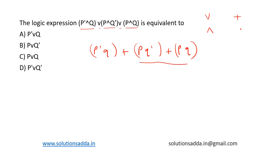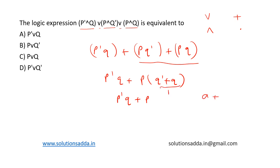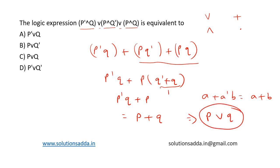Taking p common from the last two terms, we can write p̄q + p(q̄ + q), which becomes p̄q + p, since q̄ + q equals 1. This is of the form a + āb, which equals a + b. So we get p + q, which can be written as p or q. The correct answer is option C: p or q.